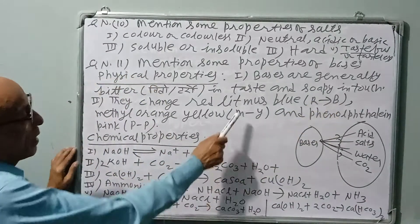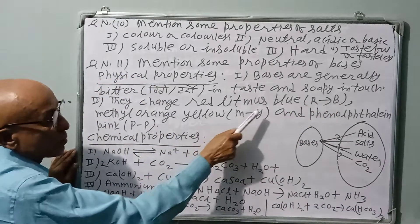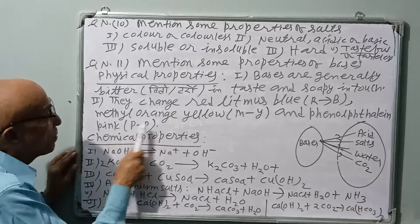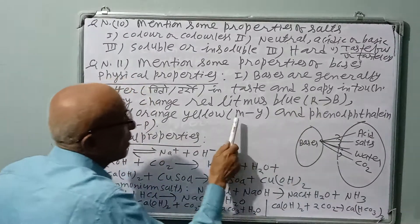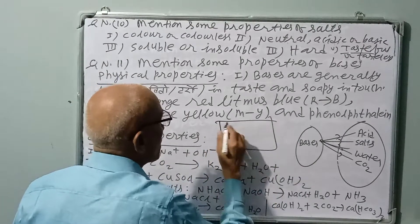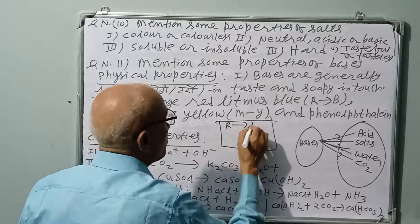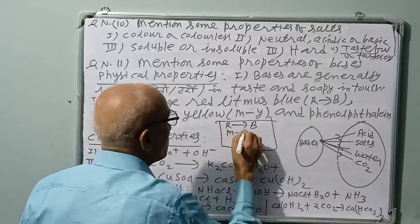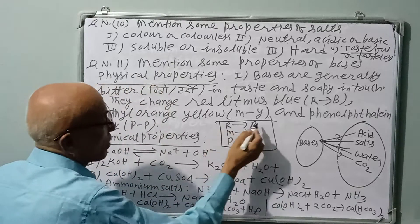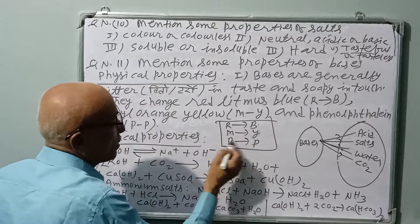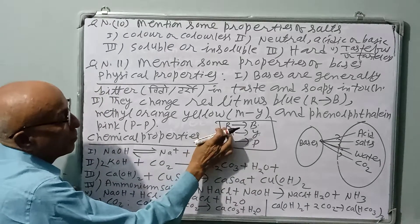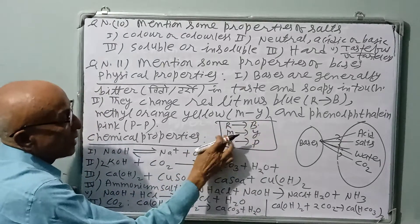They turn methyl orange yellow and phenolphthalein into pink color. To understand: RB means red litmus to blue color, MY means methyl orange to yellow. This is the technique to understand: RB MY PP. RB MY PP to understand red litmus into blue, methyl orange into yellow, phenolphthalein into pink.